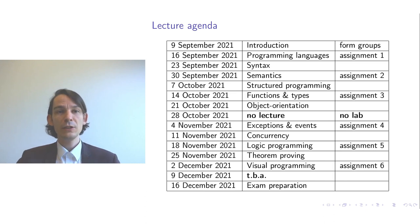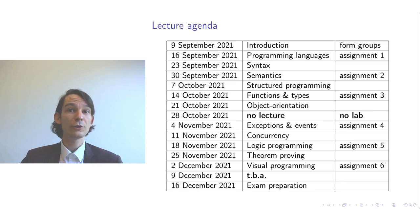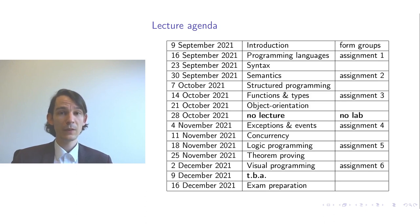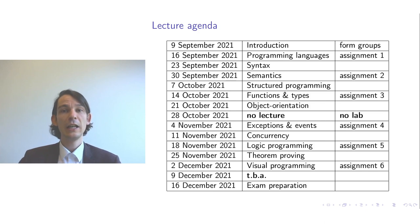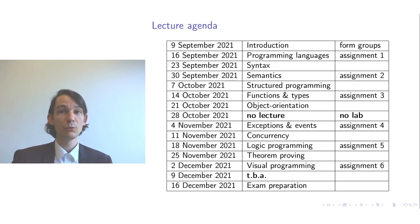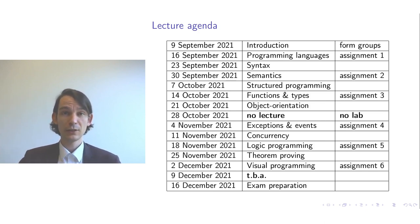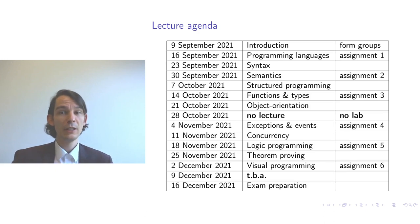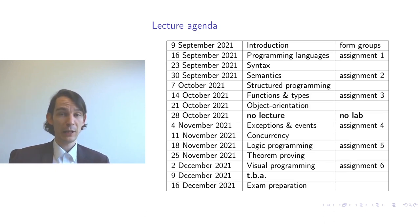What you see now is the lecture agenda. The first column consists of the dates — these are the Thursdays on which the classroom discussions and practical classes occur. The second column consists of the topics of the lectures, and the third column consists of what will be done during the practical classes. For example, this week we have an introduction and we will form groups during the practical classes.